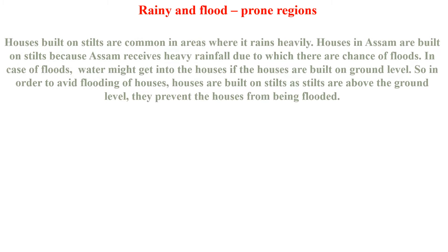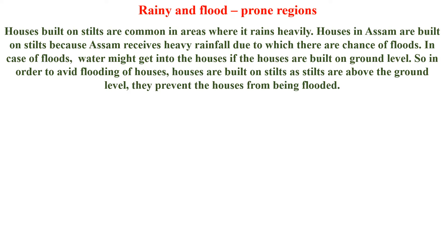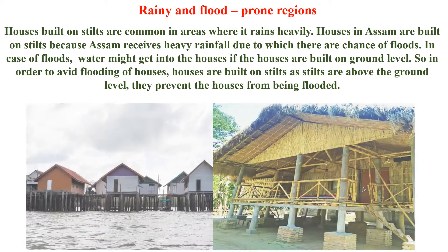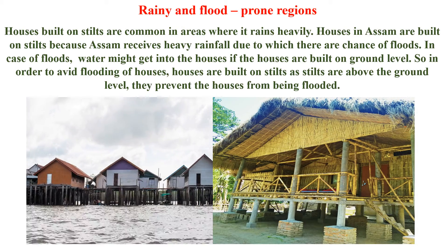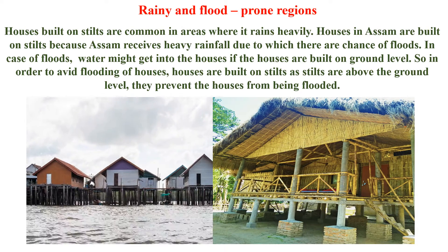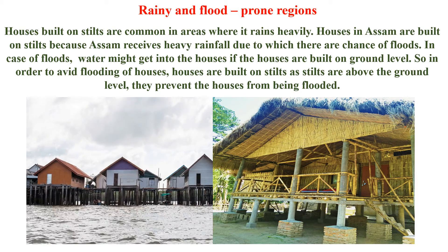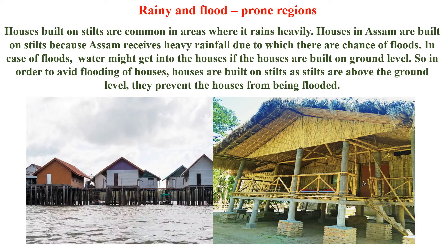Coming to rainy and flood-prone regions. Houses built on stilts are common in areas where it rains heavily. In heavy rainfall areas, people build their houses on stilts. Houses in Assam are built on stilts because Assam receives heavy rainfall, which causes floods.